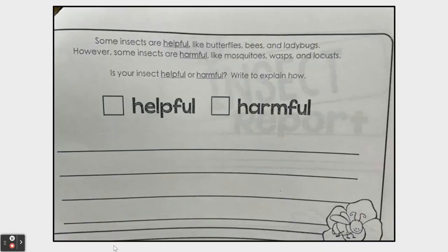Some insects are helpful, like butterflies, bees, and ladybugs — they are pollinators. Remember when we learned about pollinators? However, some insects are harmful, like mosquitoes, wasps, and locusts. Is your insect helpful or harmful? Write to explain how. Think about the insect you have chosen — is it helpful or harmful? And tell us why.